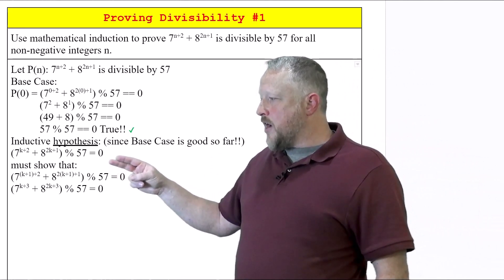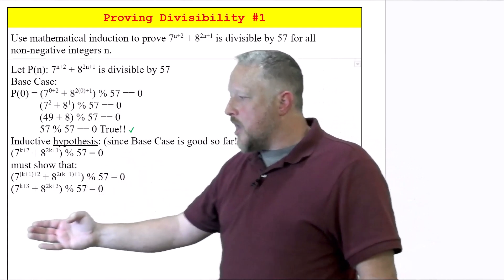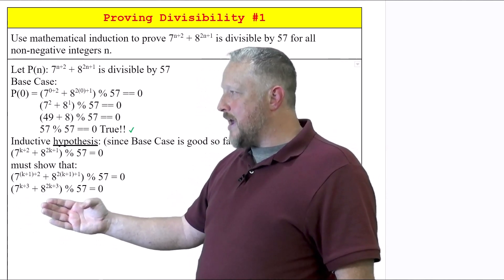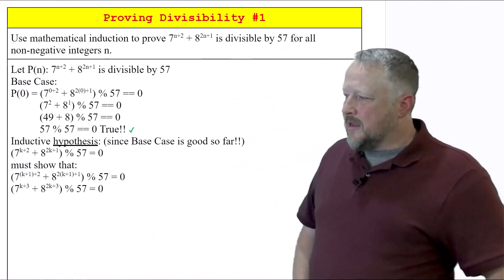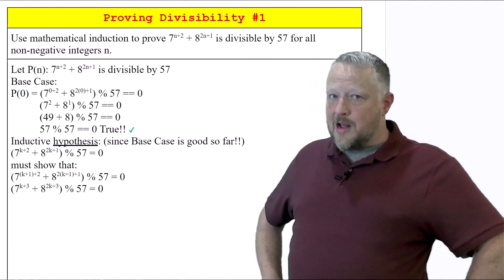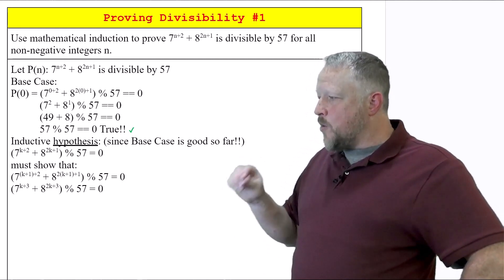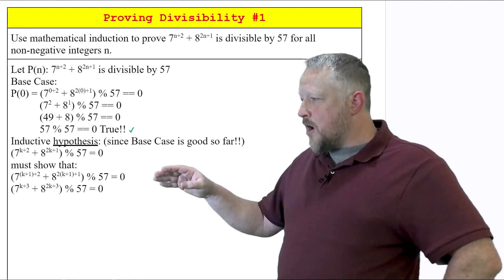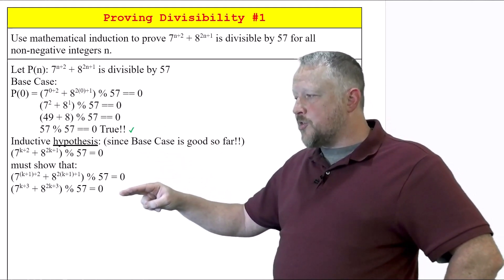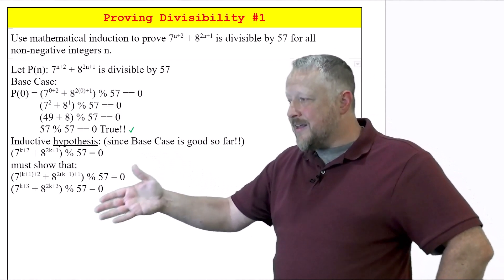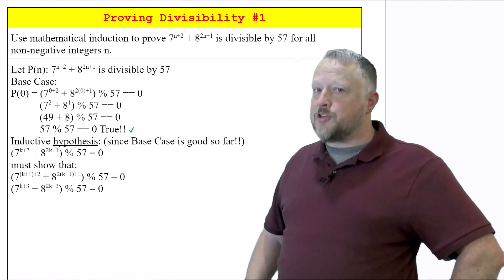In our inductive hypothesis, since our base case is good so far, this is just the same equation, just with k's in there. But I'm going to have to show that now with k plus 1 on both sides, we're going to have 7^(k+3) and 8^(2k+3) modulus 57 is going to equal zero. Now, there's not a lot of meat on that bone, and not a lot of us like working with exponents. So here's what's going to happen is I'm going to use a buildup, meaning I'm going to go from our base case and then try to do some manipulation so that we can end up having it be in that form when we're all said and done to have our portion still be modulus of 57.